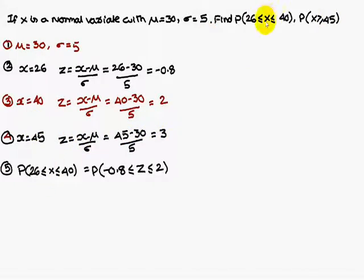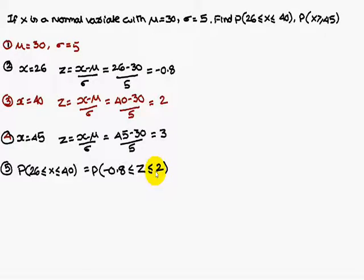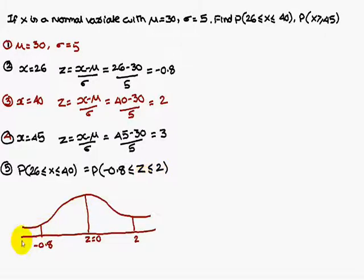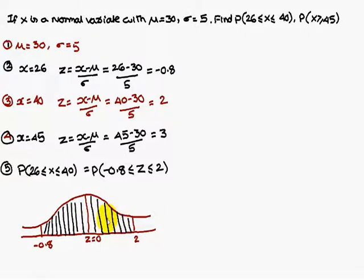Now consider the first question: probability of 26 less than or equal to X less than or equal to 40. That is the probability of minus 0.8 less than or equal to Z less than or equal to 2. Draw a bell-shaped curve with Z equal to 0 at center, place minus 0.8 on the left-hand side and 2 on the right-hand side. The shaded area between these values is what we need to find.